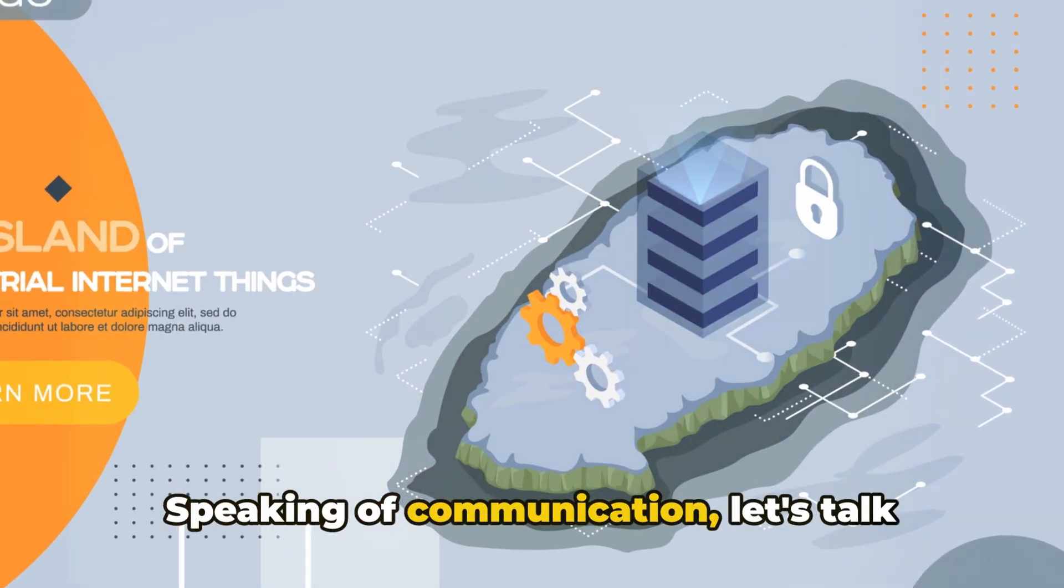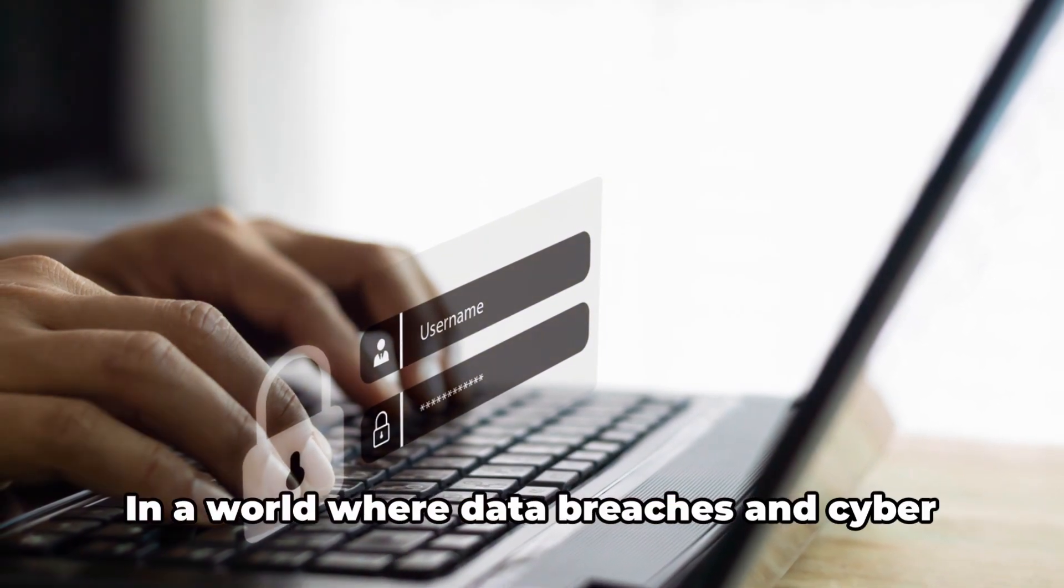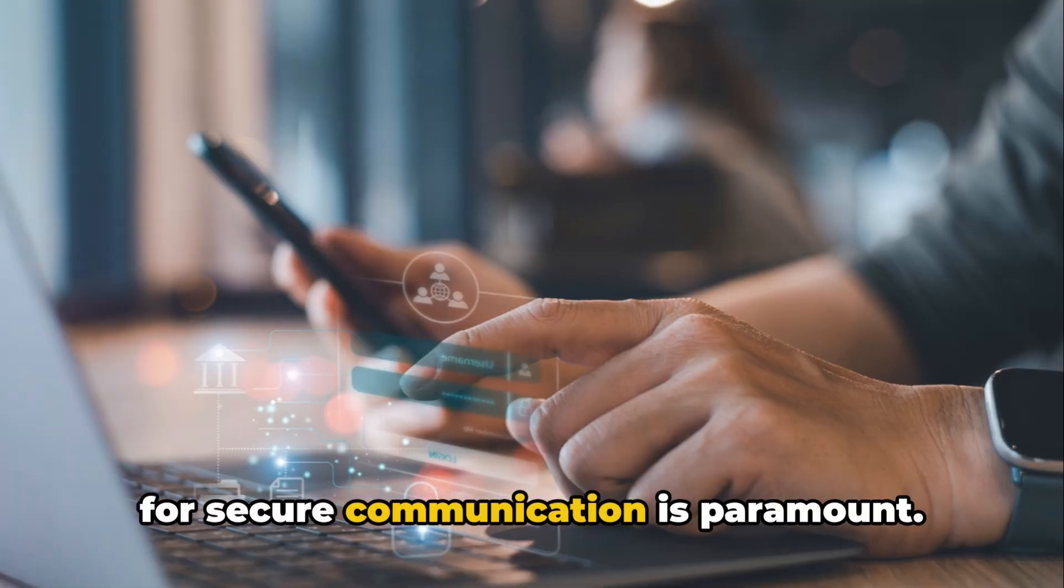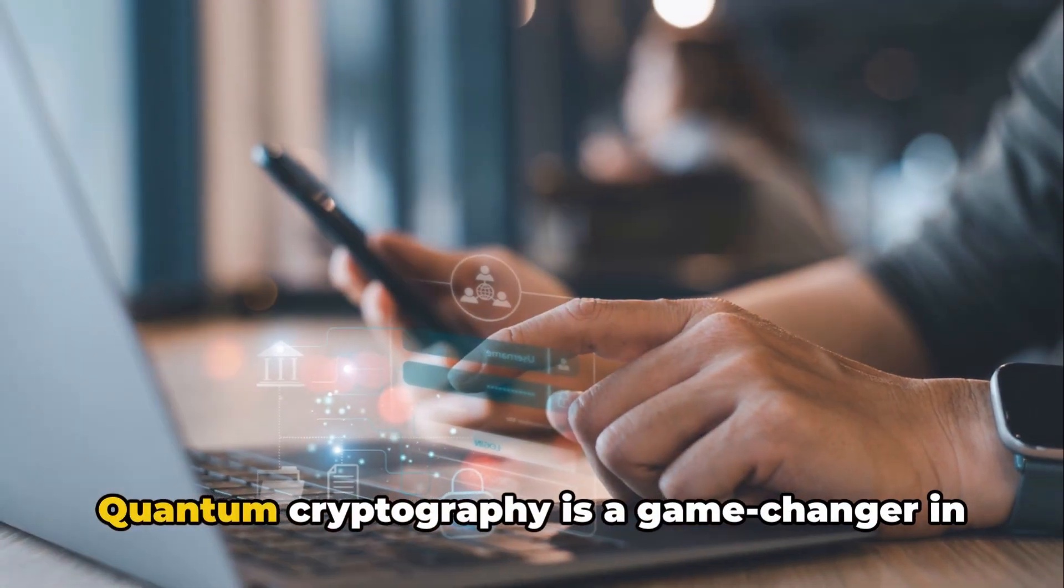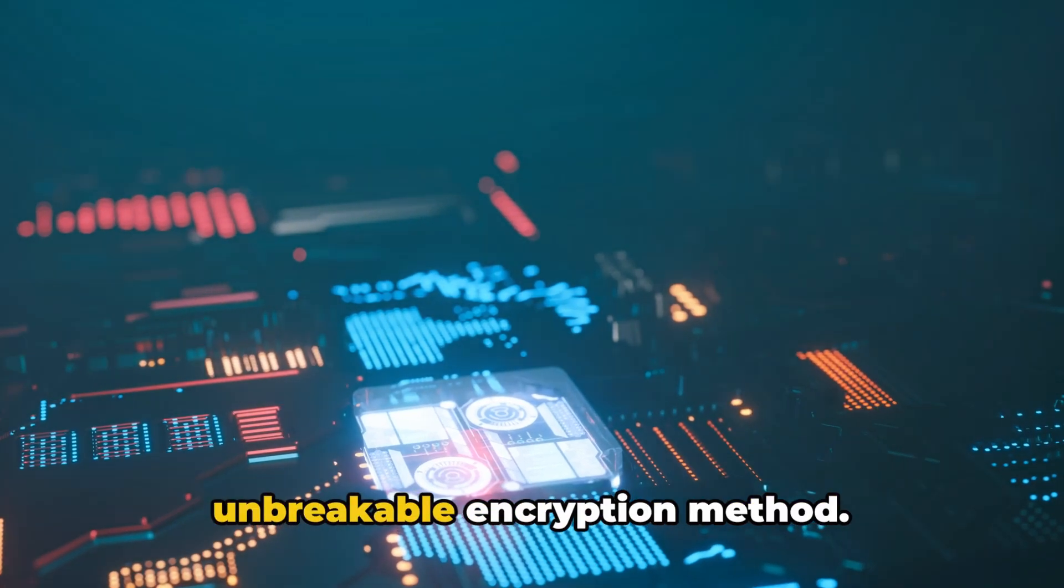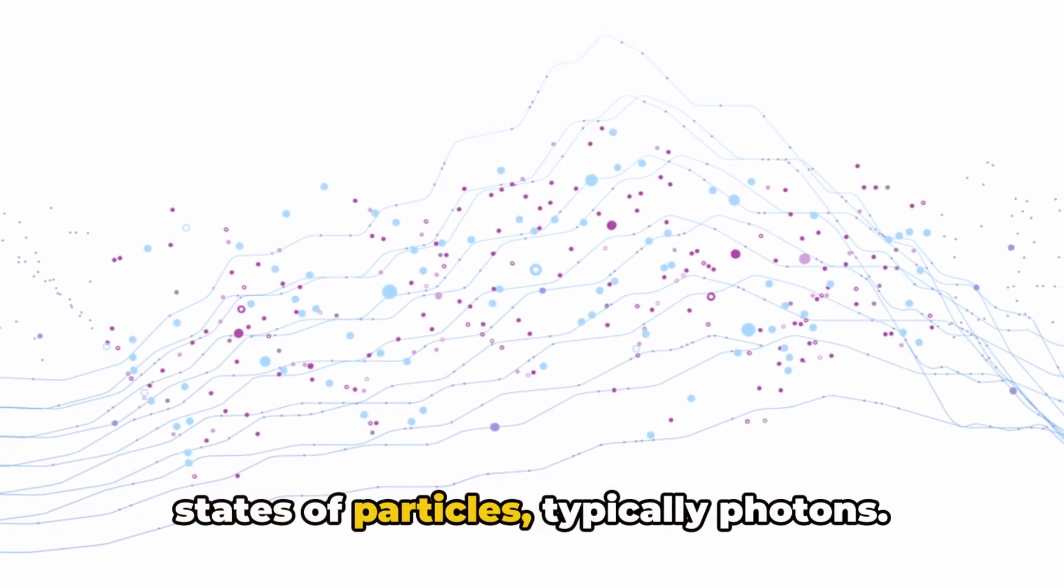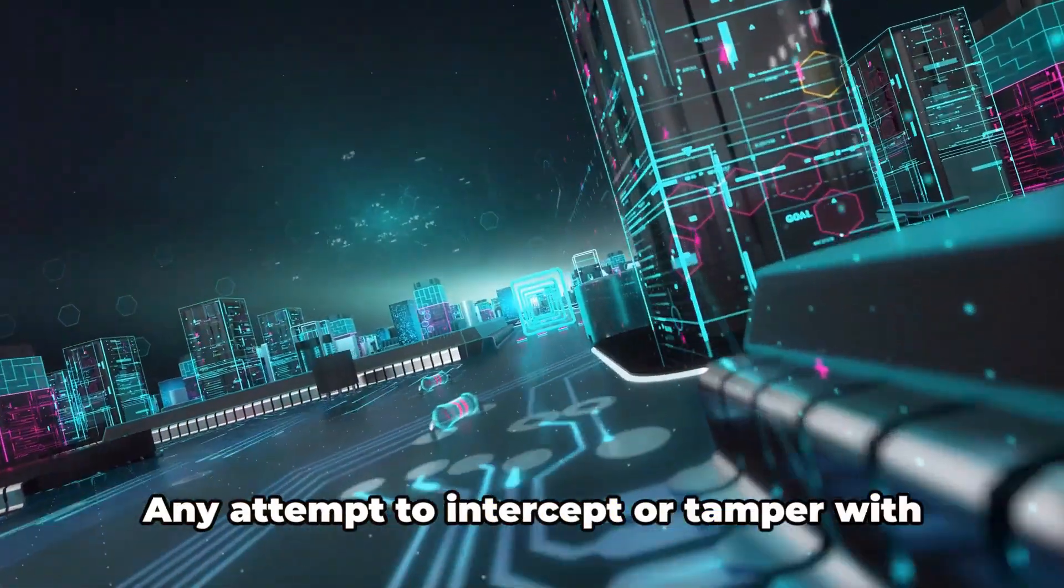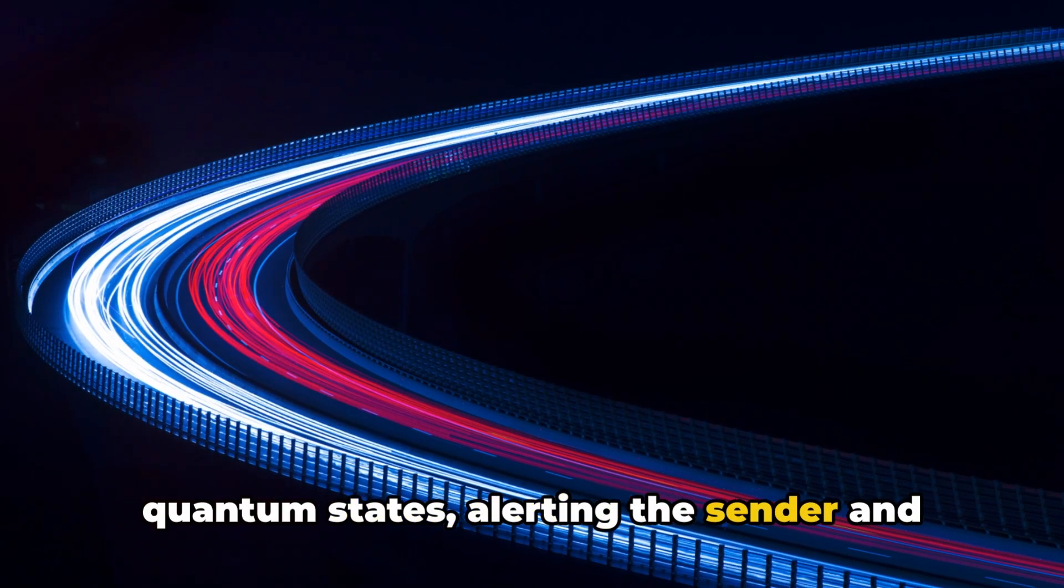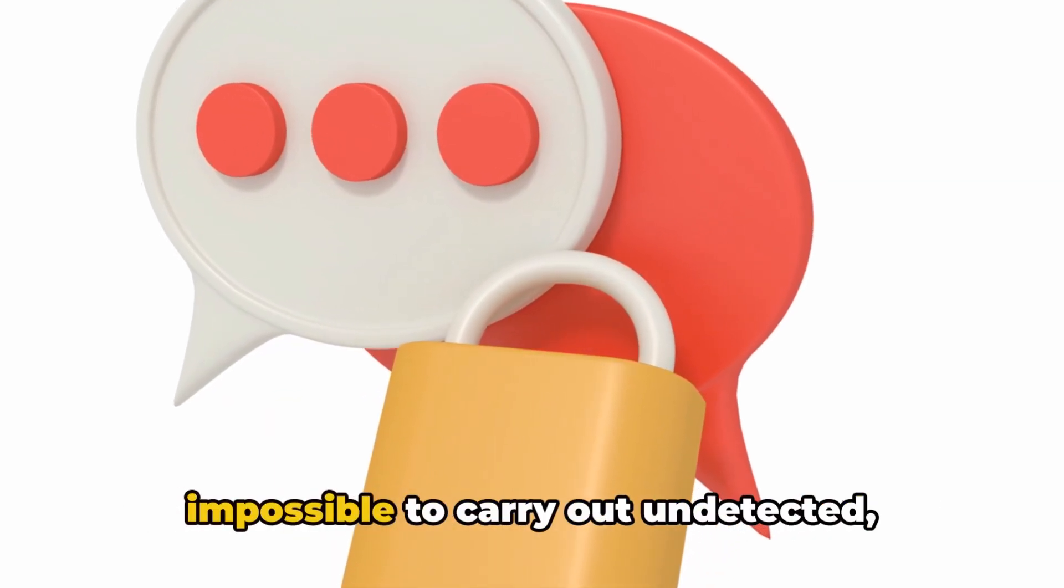Speaking of communication, let's talk about a field that's been making waves: quantum cryptography. In a world where data breaches and cyber threats are increasingly common, the need for secure communication is paramount. Quantum cryptography is a game changer in this regard, offering a theoretically unbreakable encryption method. In a quantum cryptographic system, information is encoded in the quantum states of particles, typically photons. Any attempt to intercept or tamper with the transmission disturbs these delicate quantum states, alerting the sender and receiver to the intrusion. This quantum wire-tapping is physically impossible to carry out undetected, providing a level of security that classical cryptography can't match.